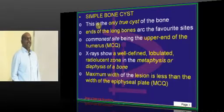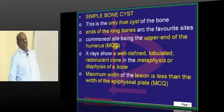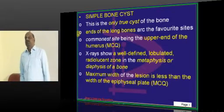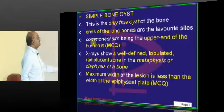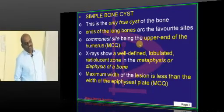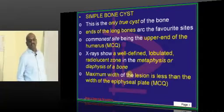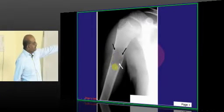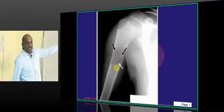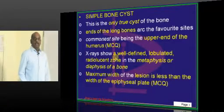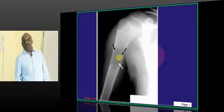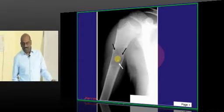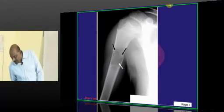The end of long bones is the favorite site for simple bone cysts. The favorite MCQ of examiners: what is the most common site for a simple bone cyst? The upper end of the humerus is the classical location. It is well defined, lobulated, a radiolucent zone located in the metaphysis or diaphysis — diaphysis means shaft, that is what you need to remember.